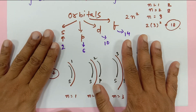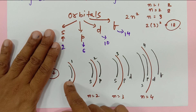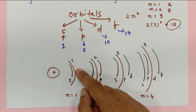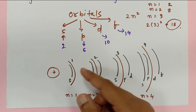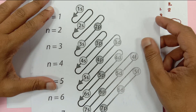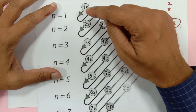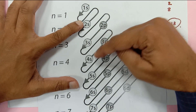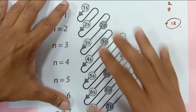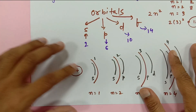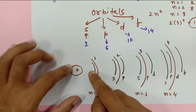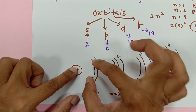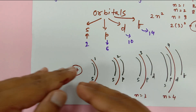The lowest energy out of all sub-orbits belongs to 1s, then 2s, then 2p, then 3s, then 3p. The sub-orbit closest to the nucleus has the lowest energy. I'd like to show you an energy chart as our reference.